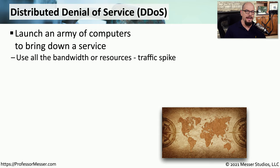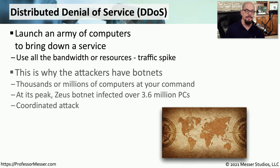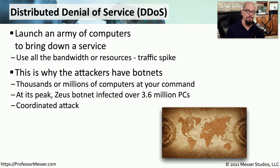A well-equipped attacker isn't going to use one system to attack one service. They're instead going to use many, many systems to attack a single service in what's called a distributed denial of service attack. This is where many devices might be used simultaneously to create bandwidth spikes or attack a particular service and cause it to be unavailable. Attackers often use botnets to perform these distributed denial of service attacks, or DDoS attacks, potentially with thousands or even millions of computers at their disposal.